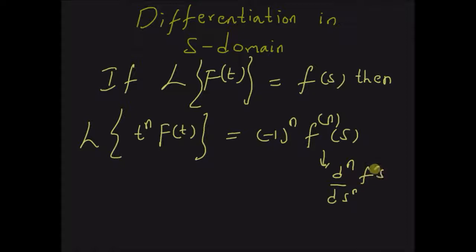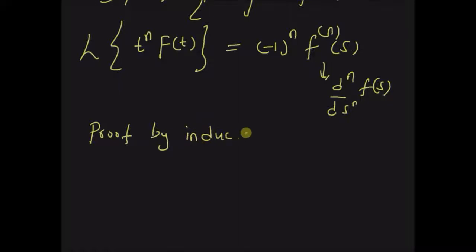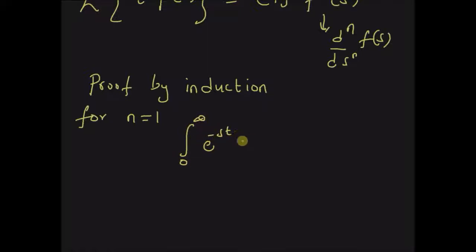Now let us look at the proof for this theorem. We are going to use proof by induction. For n equal to one, let us look at the definition of a Laplace transform: the integral from zero to infinity of e^(-st) · f(t) dt is equal to F(s).